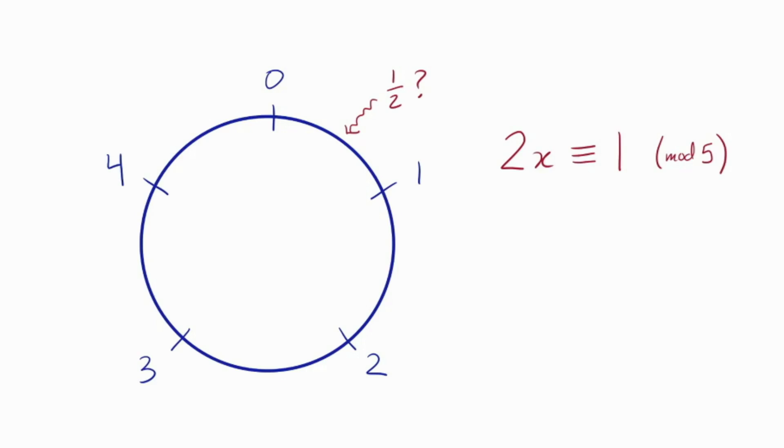Then the definition of the idea of a half is just that which solves this equation. Okay, so let's solve the equation. We're working mod five, so we can solve it by just checking everything and seeing what works. So here are the multiples of two. Now look, there it is.